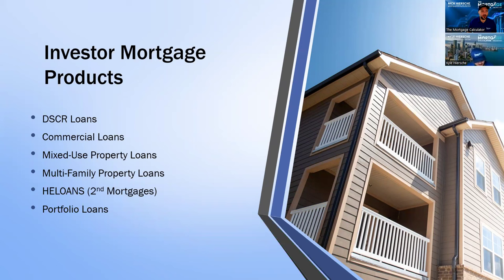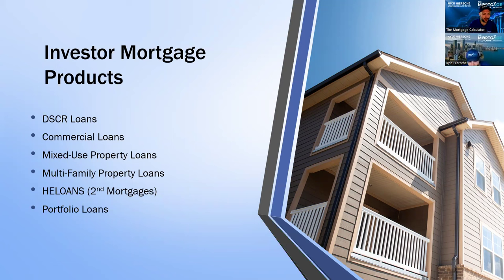What types of products do we offer for investors? Our DSCR loans are our favorite loans — we'll talk a lot more about those. Those are the most popular product we offer. We have traditional commercial loans, mixed-use property loans which are a kind of hybrid between DSCR and commercial, and standard commercial for large mixed-use properties. Same thing with multifamilies — we have a small multifamily DSCR product and then standard large 100 to 200 unit multifamilies. We have second mortgages or HELOC-type loans, very popular right now as rates are a little high. A lot of people want to keep their first mortgage and still get some cash out. We also have portfolio loan options where we can do multiple properties under one loan.